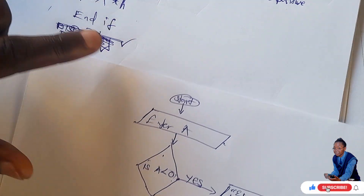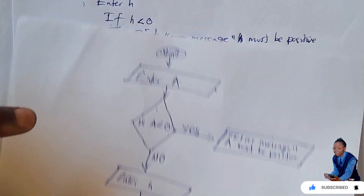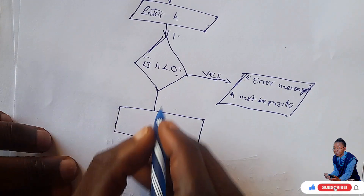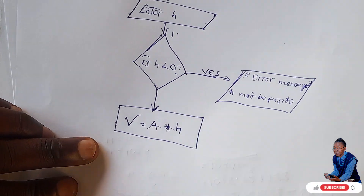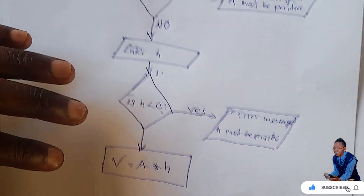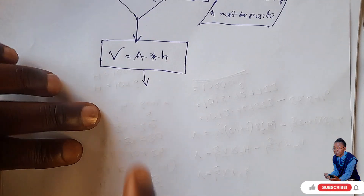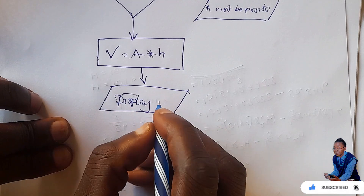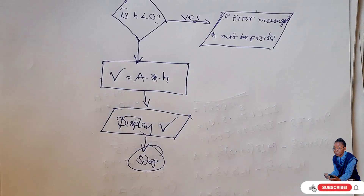Else — if all the conditions are okay, proceed to calculating volume. This is called an action box — it's a rectangle. So we say V equals A times H, which is area multiplied by height. Then it says end if — display volume. Use the parallelogram shape for display, so we say display V. Then stop — you use the oval to stop. You are done; this is your flowchart.